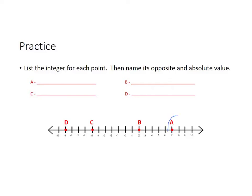Let's do A first. A is right here, and the integer is positive seven. Its opposite is the number that is the same distance away from zero on the other side, so it would be negative seven. And the absolute value of seven is seven — it is seven units away from zero.